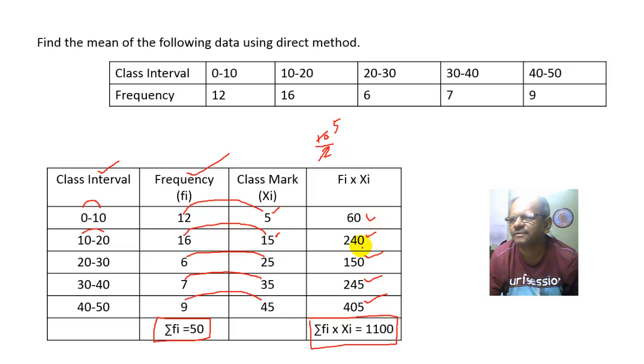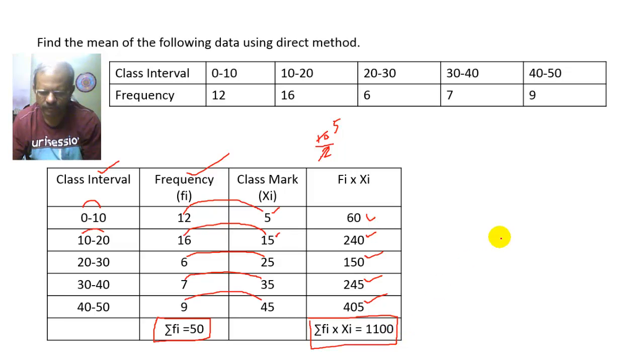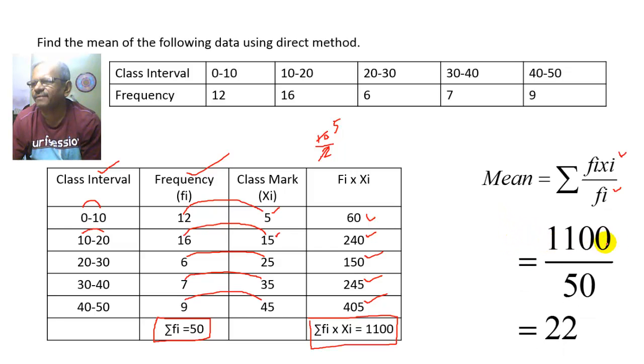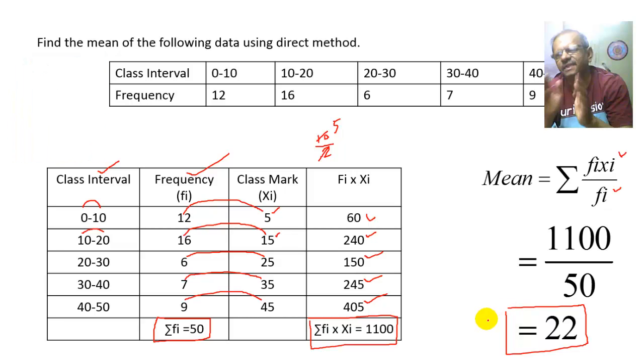60 plus 240 plus 150 plus 245 plus 405 equals 1100. Now we will use the formula. So mean equals summation of Fi Xi upon summation of Fi, that is 1100 divided by 50. So mean equals 22. Therefore, the mean of the given data is 22.